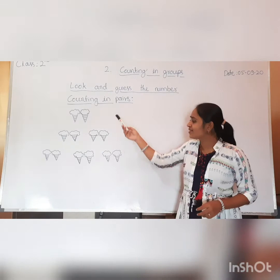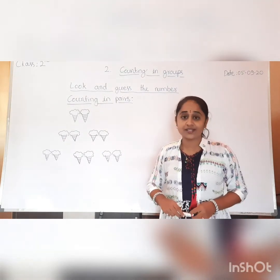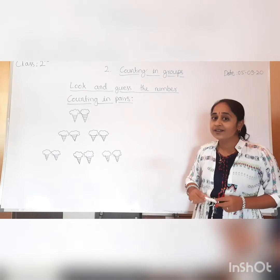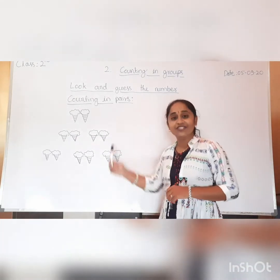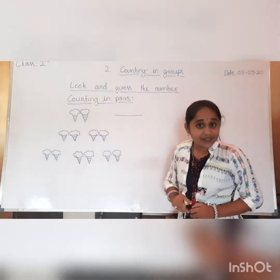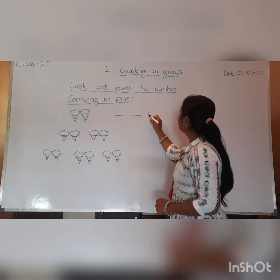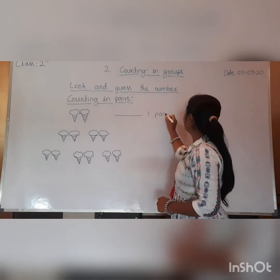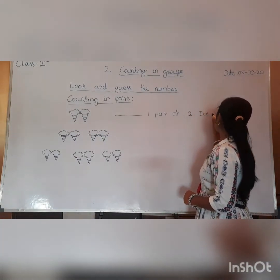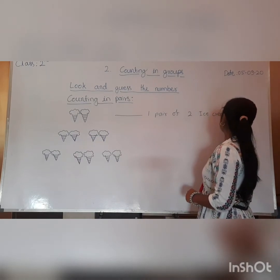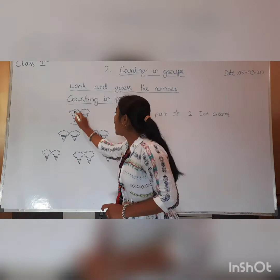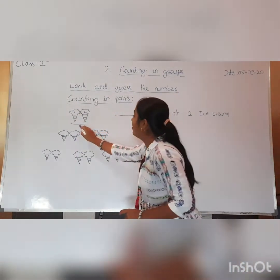Students, these are some ice creams on the board. These ice creams are arranged in pairs. How many pairs are there? Let's start. In the first row, how many pairs are there? One pair of two ice creams. Yes, this is one pair. In one pair, we have two ice creams: one, two.